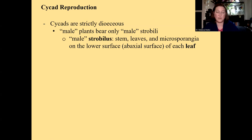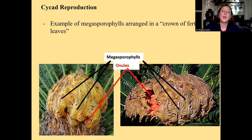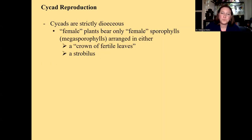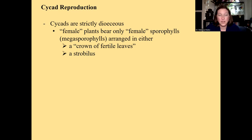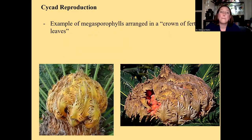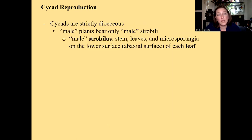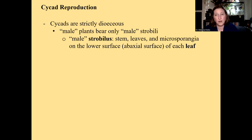Cycads are strictly dioecious — male plants and female plants. Female plants have only megasporophylls, arranged either in a crown of fertile leaves or on a strobilus depending on the species. Male plants always have microsporophylls arranged in a strobilus.